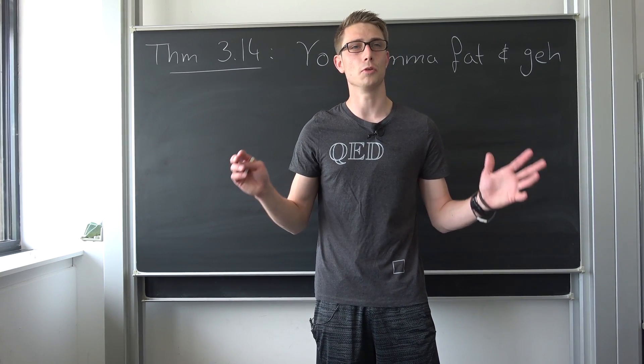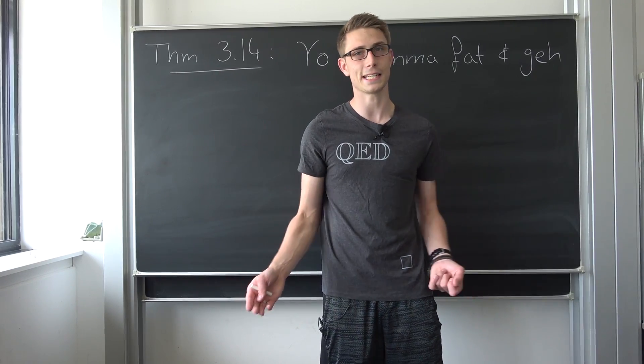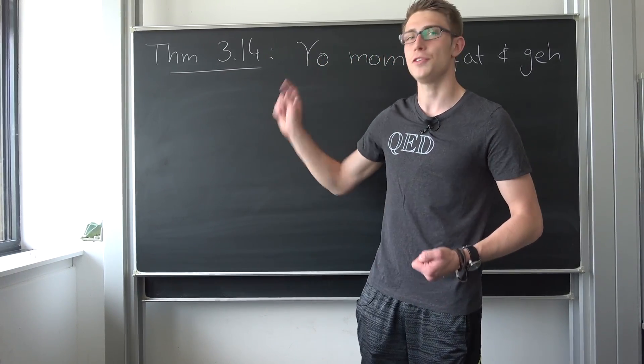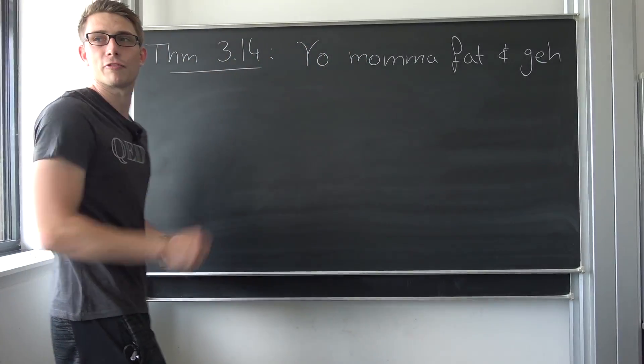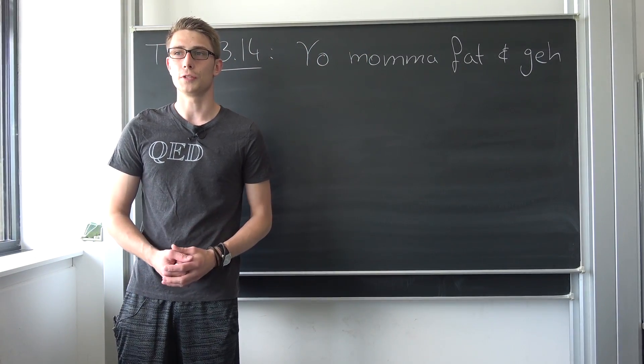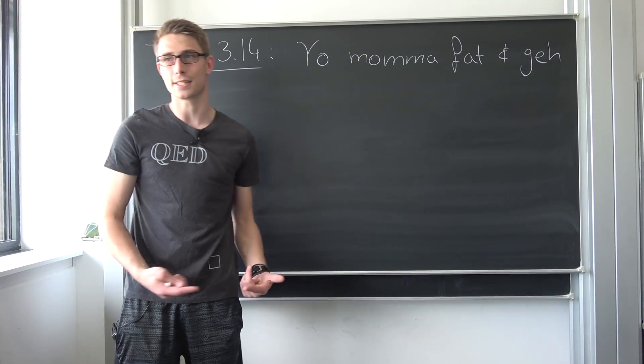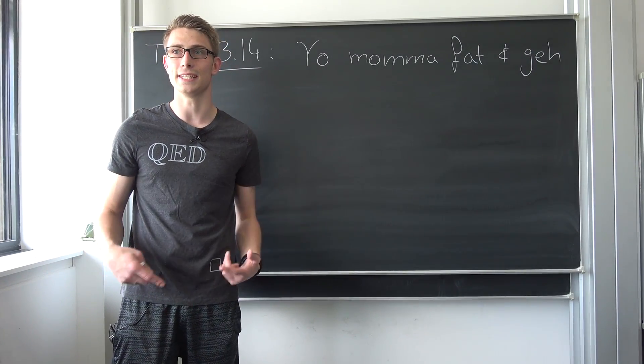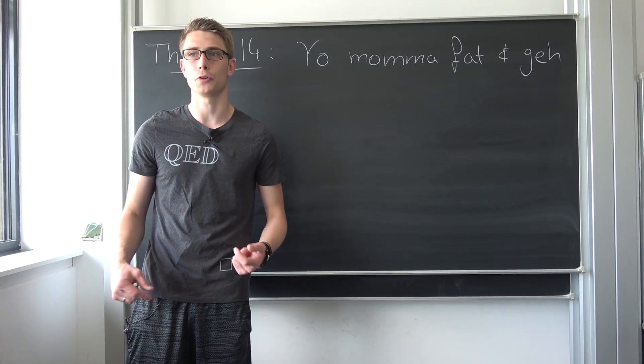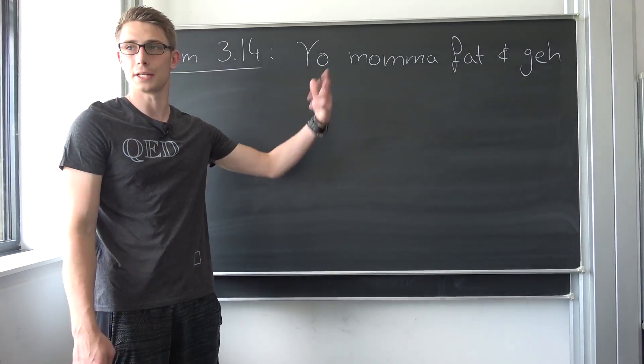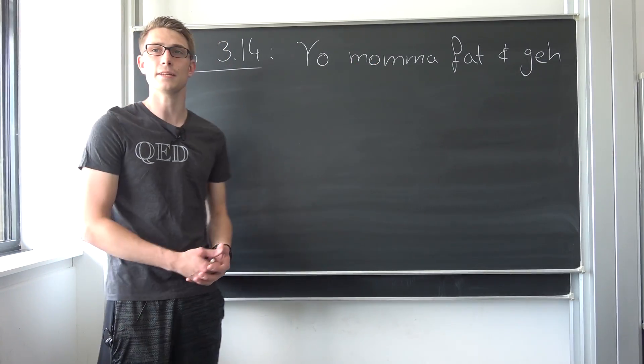This right here class is going to be the first proof by contradiction you are ever going to see. It's a really classic example we are going to prove today. Theorem 3.14 in the algebra course: Your mama fat and gay. How can we prove this theorem? Well, why not strive for a contradiction? We are going to negate this statement and we are going to show that the negated statement is wrong. This is what we call striving for a contradiction. And thus, by simple first order logic,